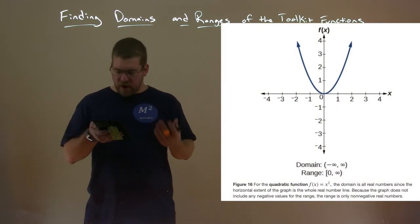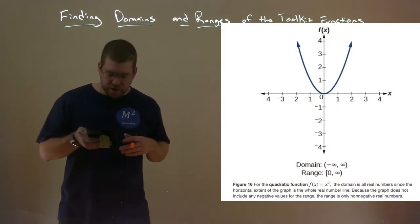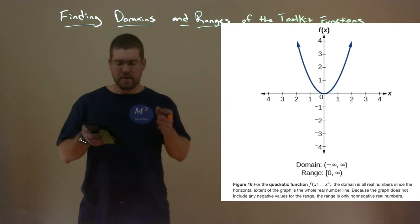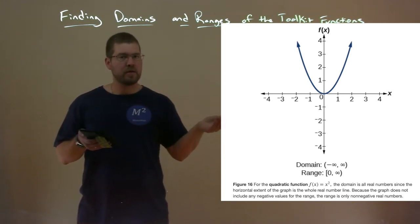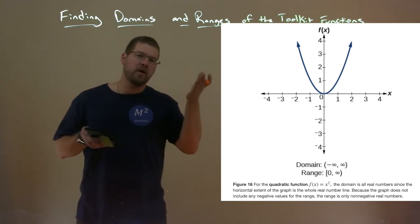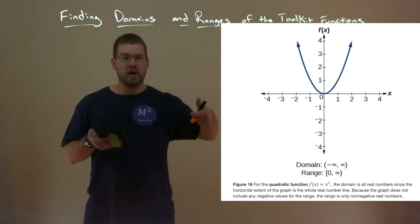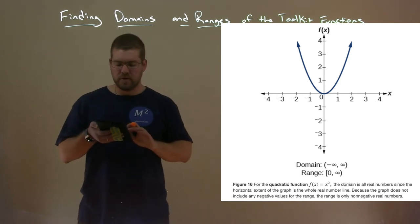The quadratic function f of x equals x squared has the same domain, negative infinity to positive infinity, and the same range, from zero including zero up to positive infinity, and it touches the origin.